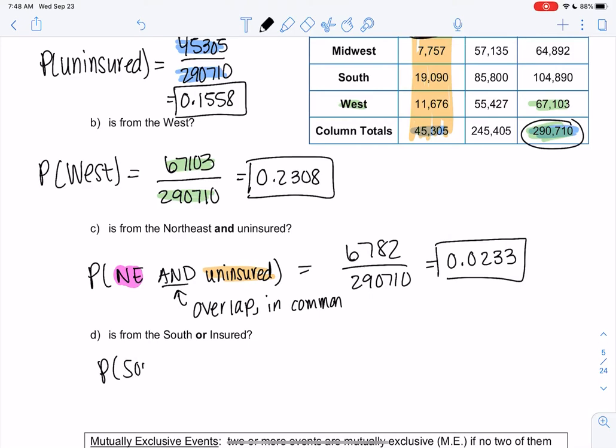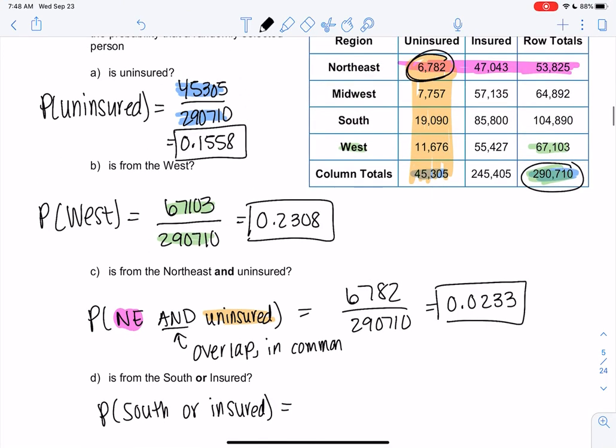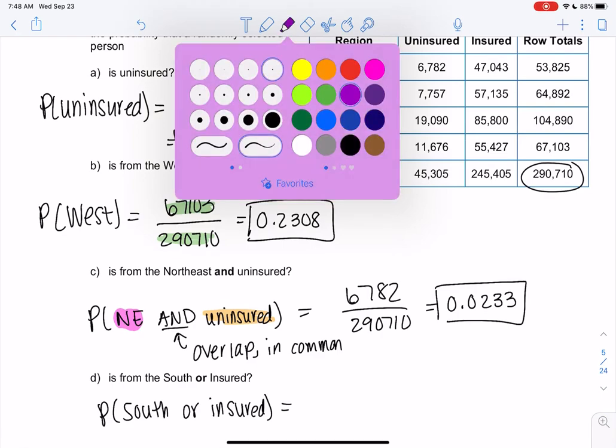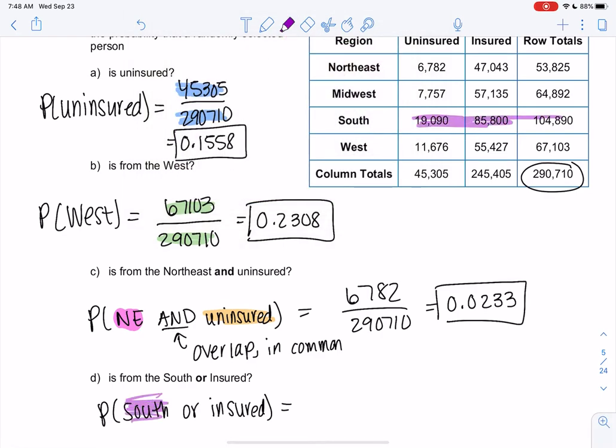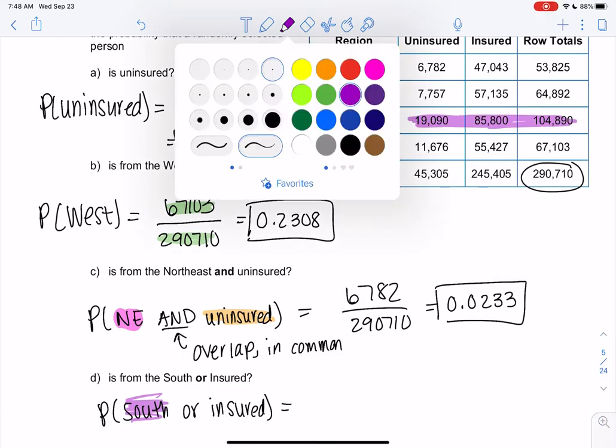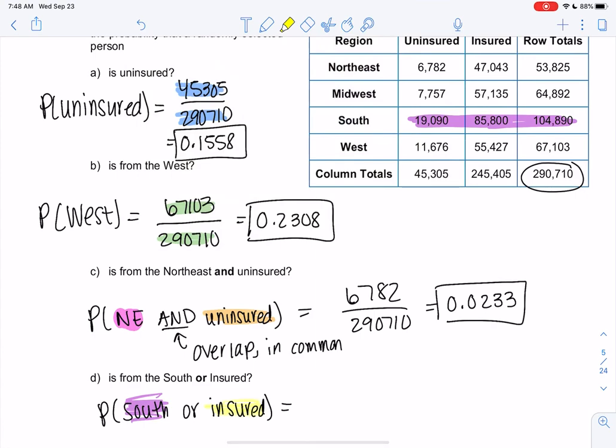And our final one is an or. I think ors are much more challenging because you have to worry about those overlaps and not double counting them. So let's do the South. We'll highlight the South. And then insured. So insured would be this row. And then the total hasn't changed. So it's still out of 290,710. So the or is either or.